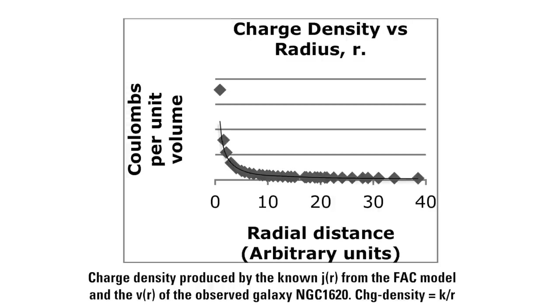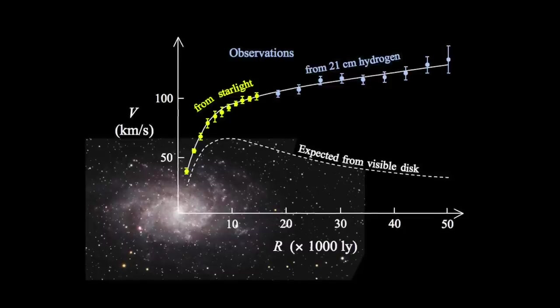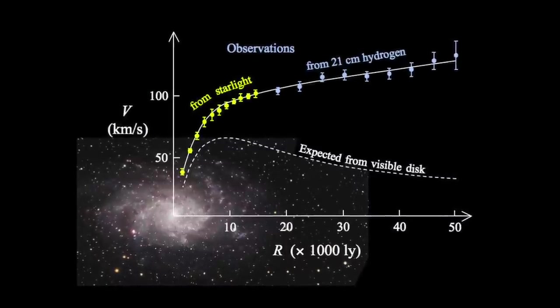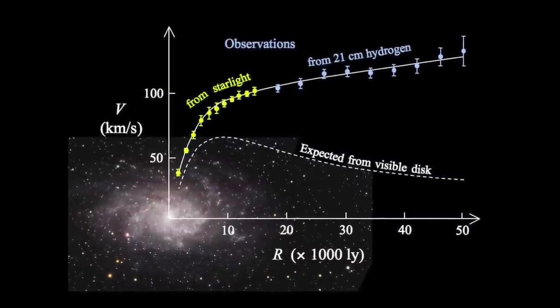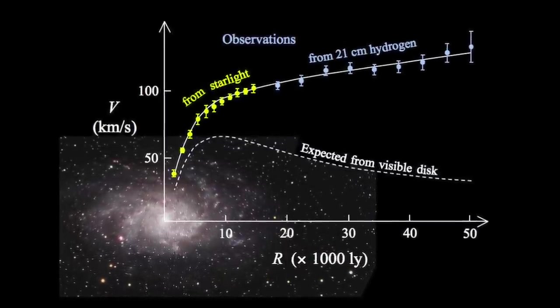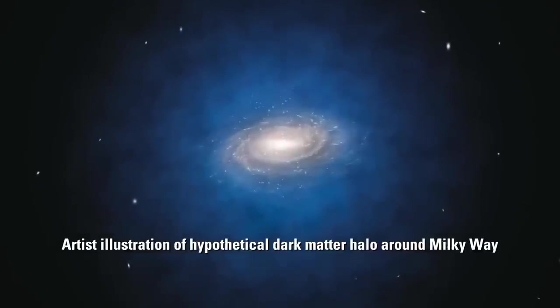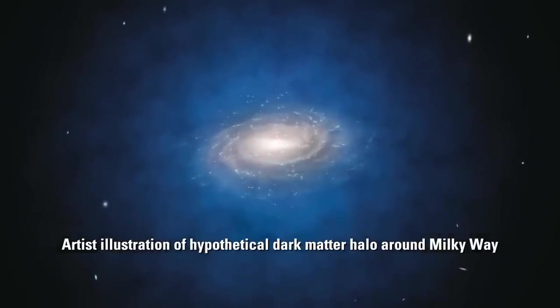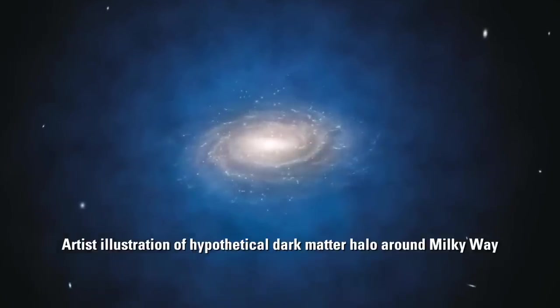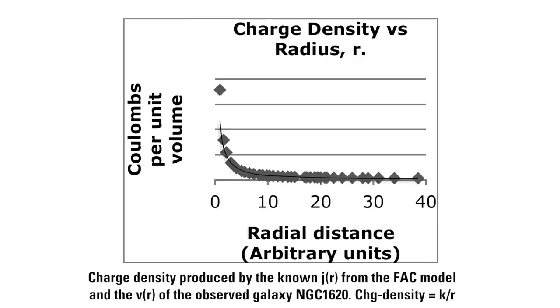This clearly demonstrates that an electrical process exists that can produce the heretofore inexplicable stellar velocities that prompted astronomers to search for dark matter in the first place. In other words, the refusal to accept the existence and effects of electrical charges in space is what began and maintains to this day the dark matter wild goose chase.